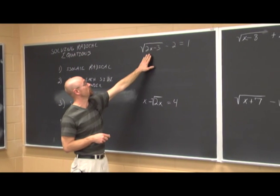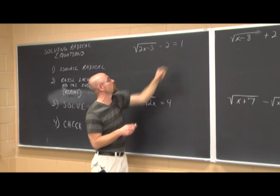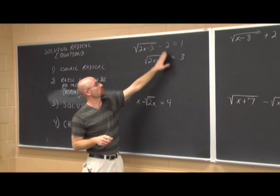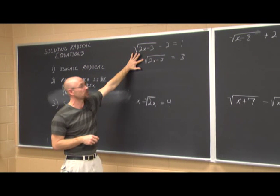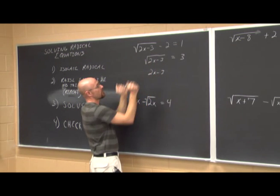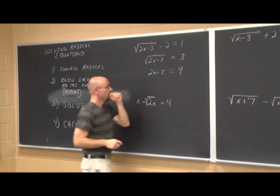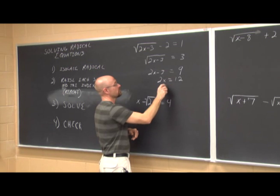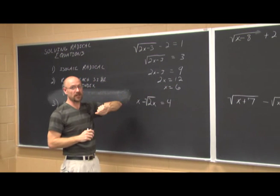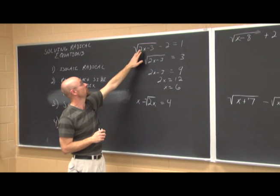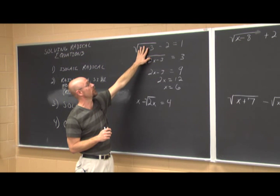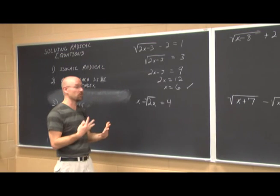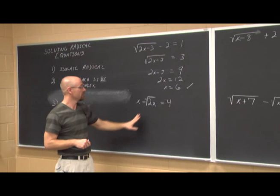Step one says we have to isolate the radical first. I'm going to add 2 to both sides, so I have the square root of 2x minus 3 equals 3. The index is 2, so I square both sides, which gets rid of the radical, and 3 squared is 9. Now I add 3 to both sides and divide by 2, getting x equals 6. Checking: 2 times 6 is 12, minus 3 is 9, the square root of 9 is 3, and 3 minus 2 is 1. It works.